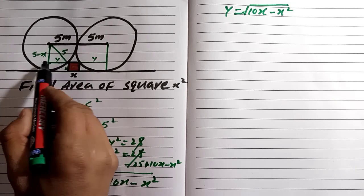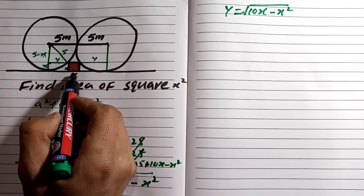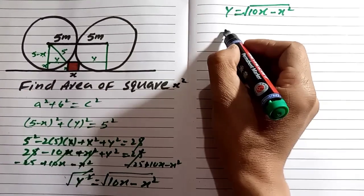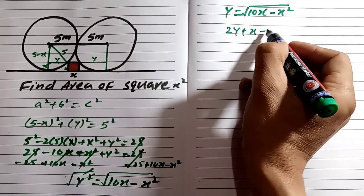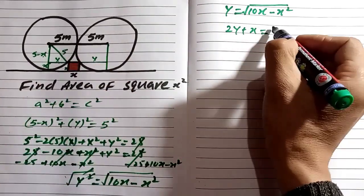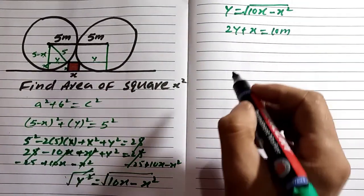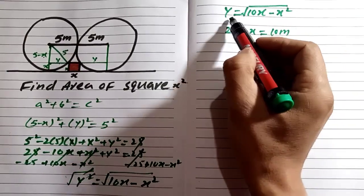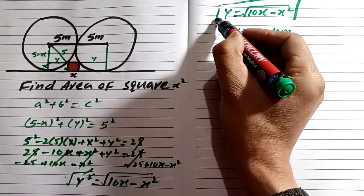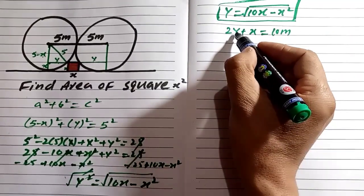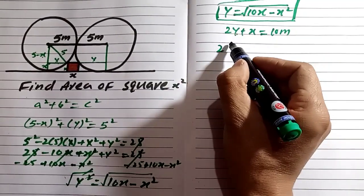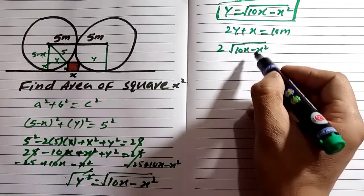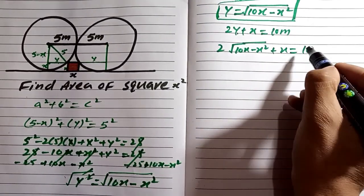Looking at the rectangle, the total length will be equal to Y plus X plus Y, so the total length equals 2Y plus X, which equals five meters plus five meters, which is 10 meters. We know our value of Y equals the square root of (10X minus X squared). We substitute Y into the equation: 2 times the square root of (10X minus X squared) plus X equals 10.